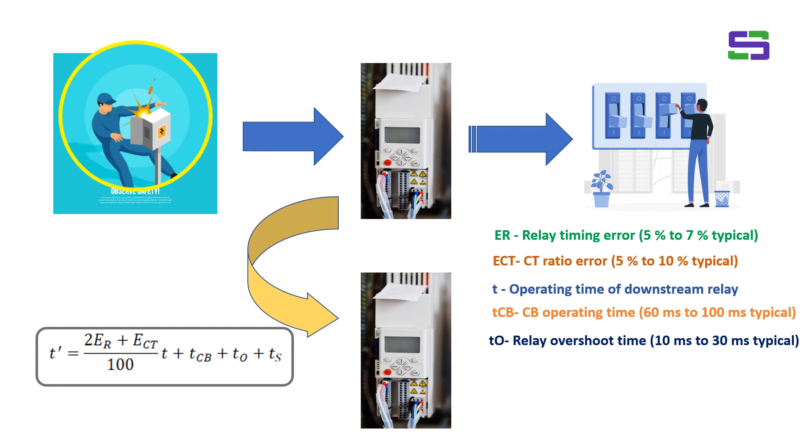TO is the relay overshoot time, typically this is 10 millisecond to 30 millisecond, sometimes it is more than 30 millisecond. Nowadays, numerical relays are being used. So this relay overshoot time is applicable mainly not for static relays, this is mainly for the electromechanical relays where in previous days we used the electromechanical relay, which is disk operated.